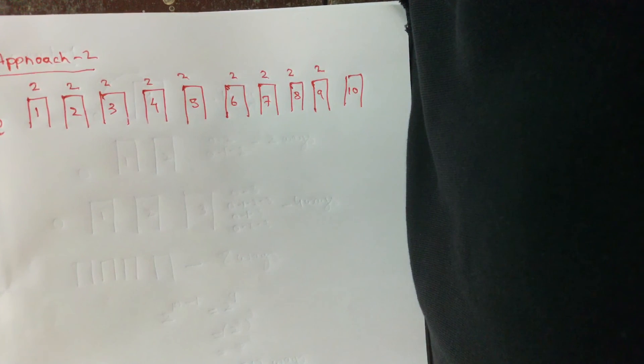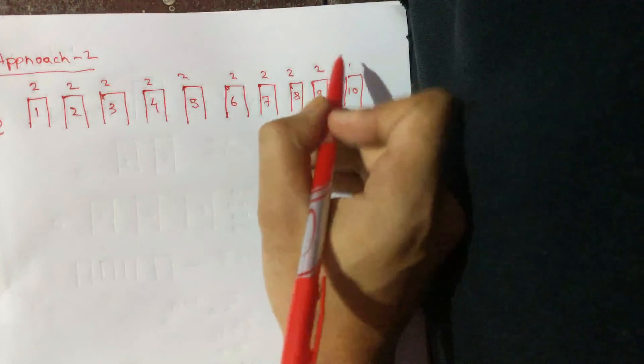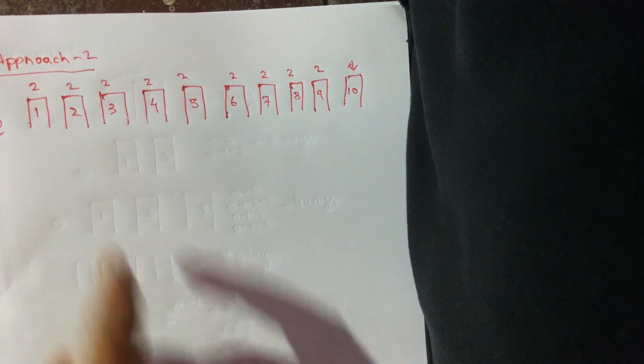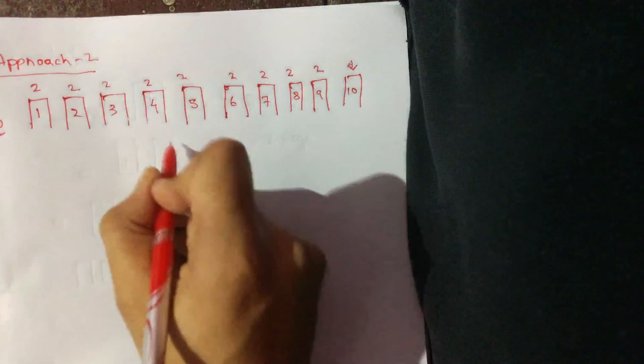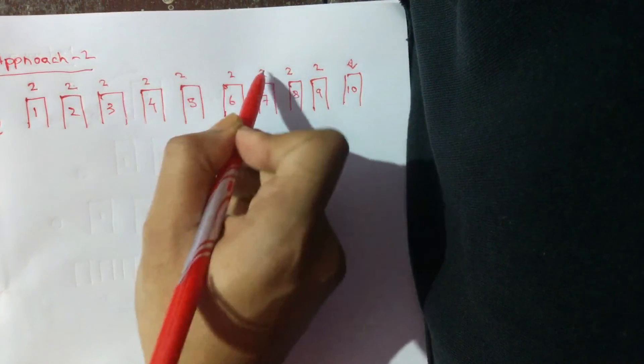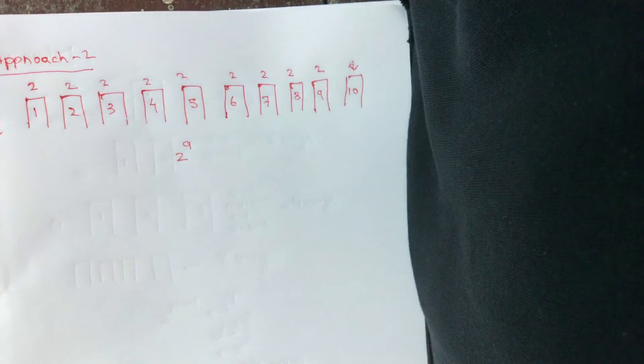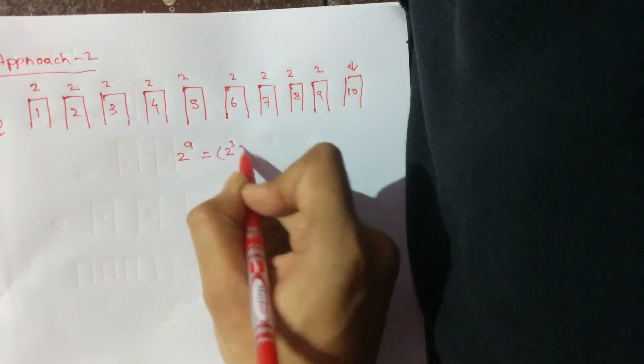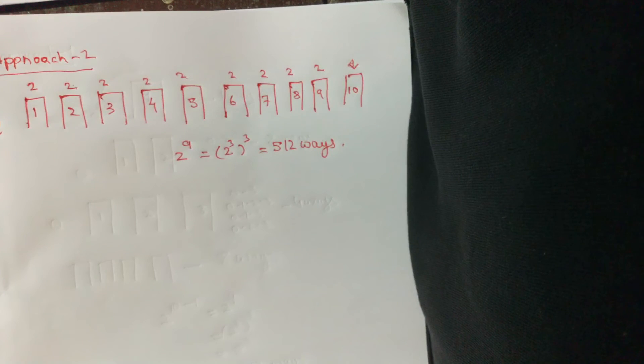However, for the tenth building, he has only one choice because he cannot skip this building. He has to land here, right? So he has to land here. For all the other buildings he has two choices, and therefore there's how many twos? One, two, three, four, five, six, seven, eight, nine. Just nine twos, which is nothing but similarly again 512 ways. And I hope you enjoyed the question. Thank you.